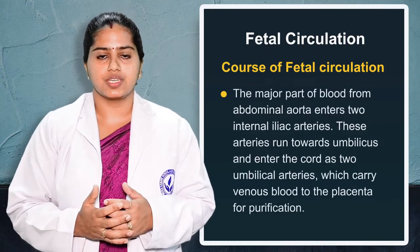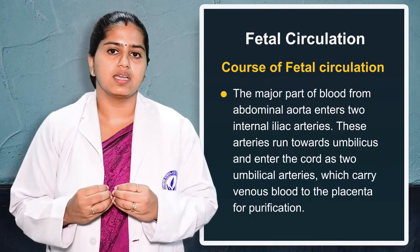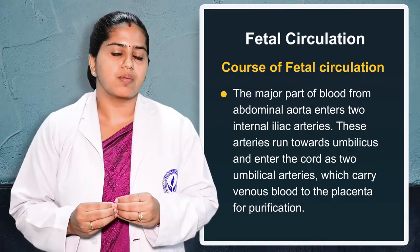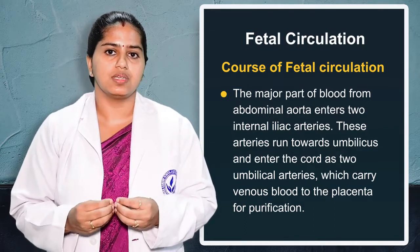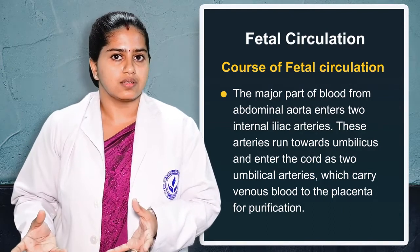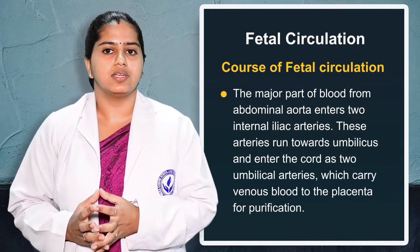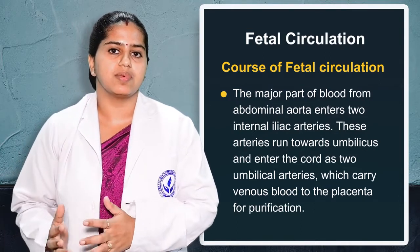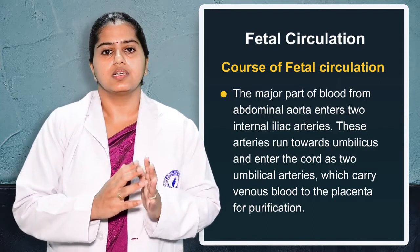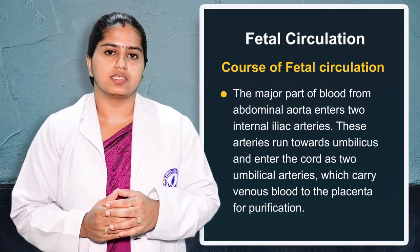All the deoxygenated blood from the lower extremities is carried and reaches the abdominal aorta. From the abdominal aorta it branches into the internal iliac arteries. The internal iliac arteries supply the umbilical arteries. The umbilical arteries carry all the deoxygenated blood to the placenta. This is the complete course of circulation that takes place in the fetus.